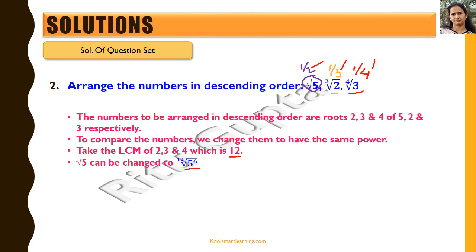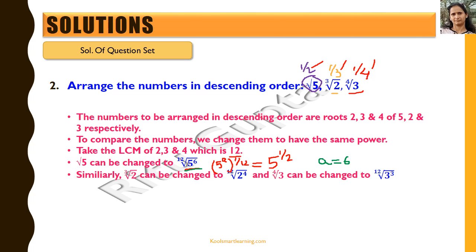To see how we get that: changing root 5 to some number raised to the power 1 by 12 means we have 5 raised to power a, whole raised to power 1 by 12, equal to 5 raised to power 1 by 2. Using the law of exponents, a equals 6. Similarly, we change cube root of 2 to 2 raised to power 4, whole raised to power 1 by 12, and the 4th root of 3 becomes 3 cubed, whole raised to power 1 by 12.